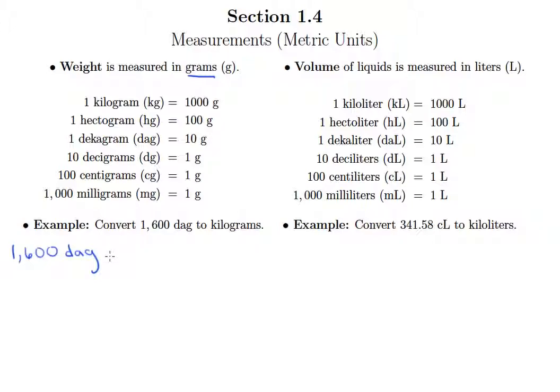So we have 1600 decagrams. We want to convert to kilograms. Now, the only equivalence involving decagrams that I have is that one decagram equals 10 grams. But notice grams relate to everything, including kilograms. So we'll do a unit conversion factor that takes us from decagrams to grams. We can see that 10 grams is equal to one decagram.